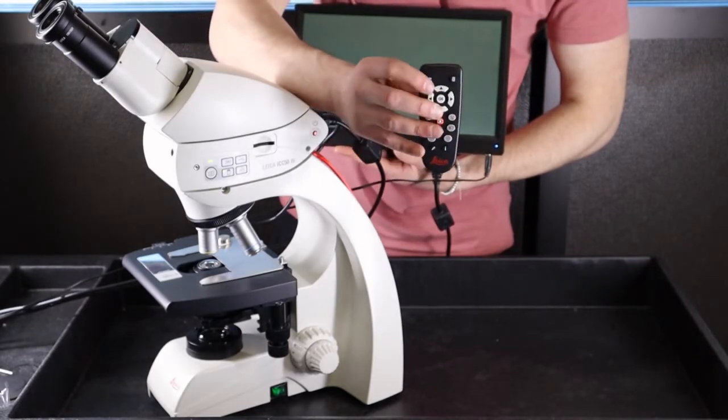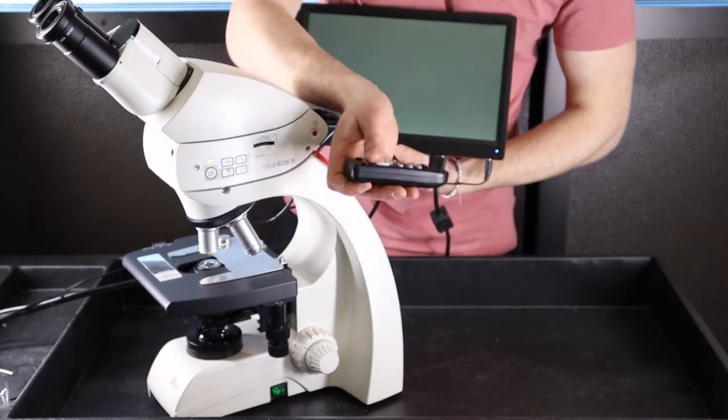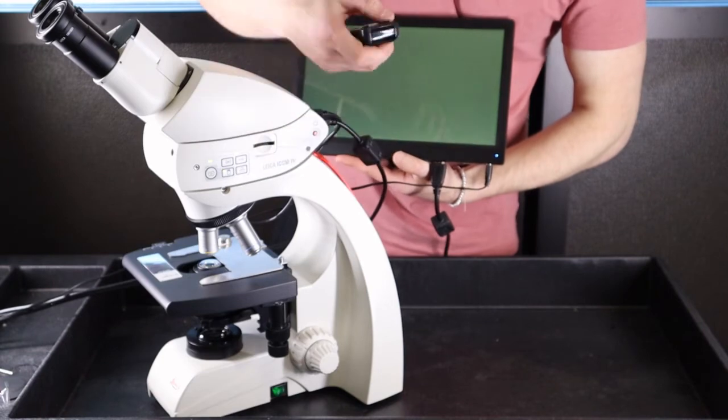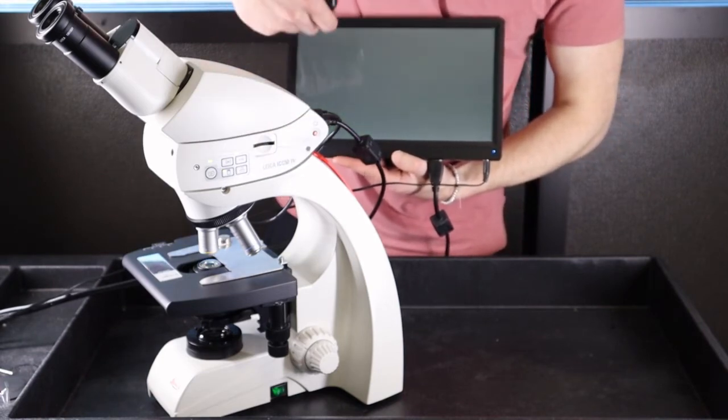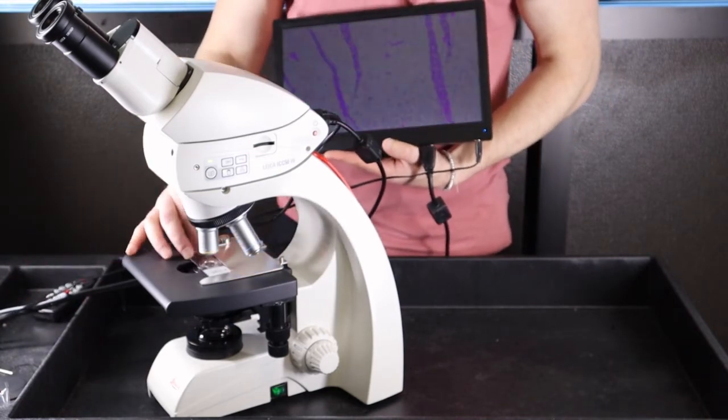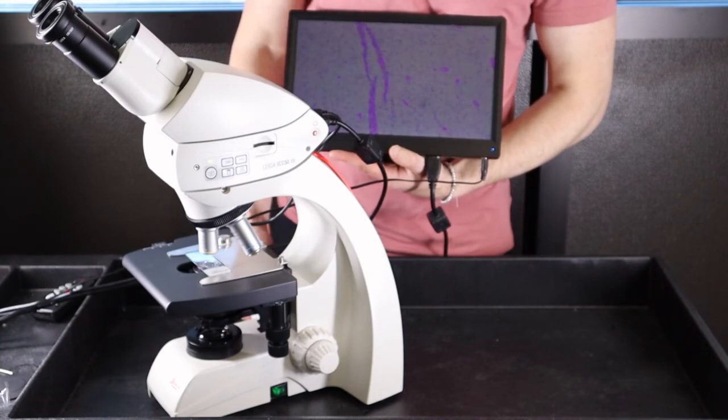The top left button is the WB button for white balance. Point the remote at the camera sensor, which is located on the front of the camera, and click the white balance button. It will say processing and you'll hear a noise. Now your camera is white balanced for more color accuracy to your sample.